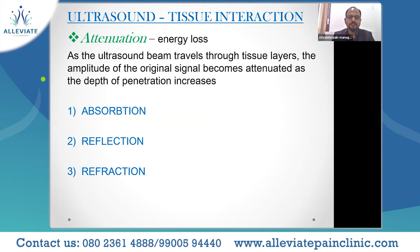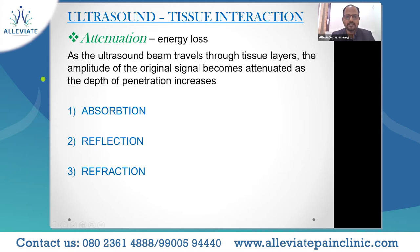Ultrasound tissue interaction: what happens to the ultrasound waves as they pass through various tissues? The most common thing that happens is energy loss — that is attenuation. As the ultrasound beam travels through tissue layers, the amplitude of the original signal becomes attenuated as the depth of penetration increases. Energy loss occurs because of three things: absorption, reflection, and refraction.